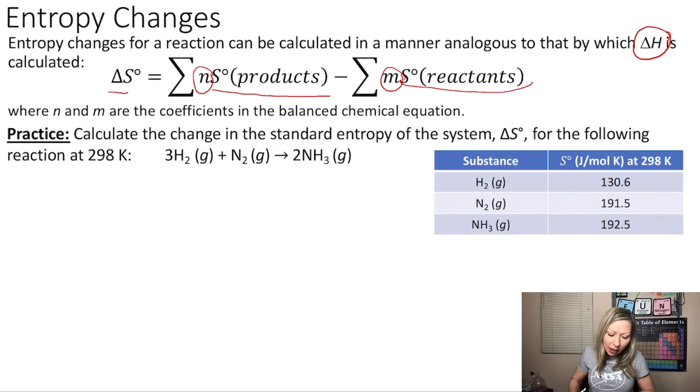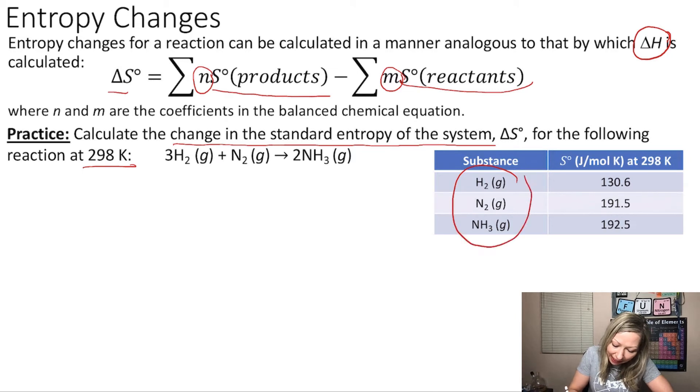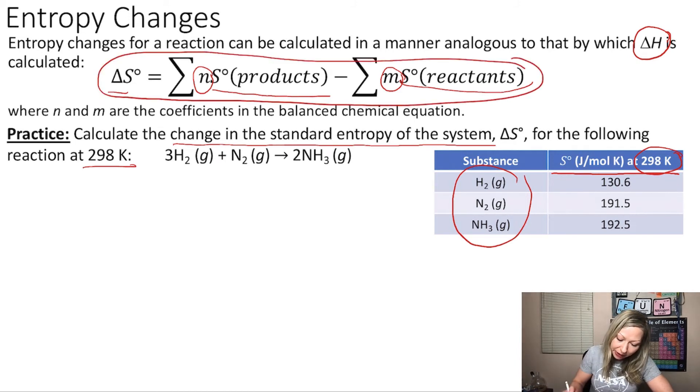Let's do a simple question. Let's calculate the change in the standard entropy of the system for the following reaction at 298 Kelvin. You can find the different values for standard entropies in Gen Chem books or even online. Here we have our substances and the standard entropies at 298 Kelvin.